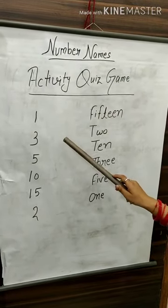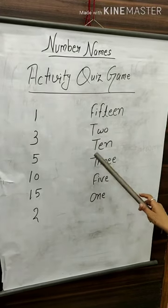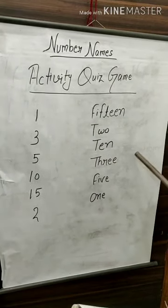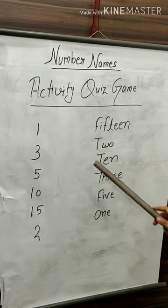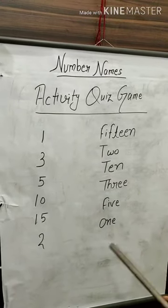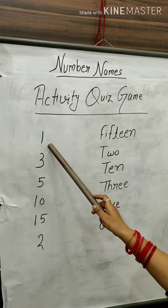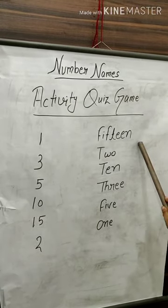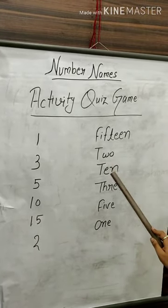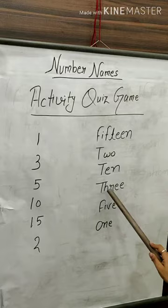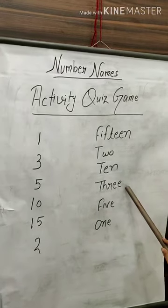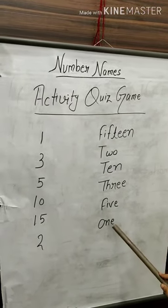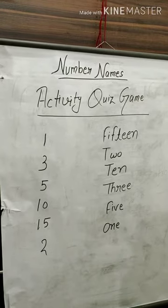As you can see, I have numbers from one side and number names on the other side. Let's match them. 1 — fifteen, two — ten, three — five, one.